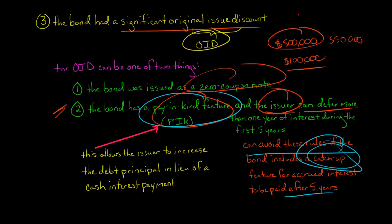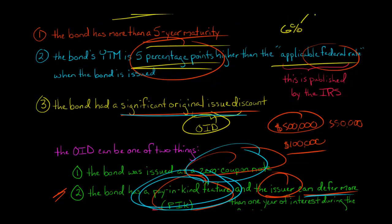But if they don't have that, then when you have a bond with a pay-in-kind feature, and you defer up more than a year of interest during the first five years, then it's treated the same way as if you had a zero coupon note. Either of these cases, these are significant original issue discount.